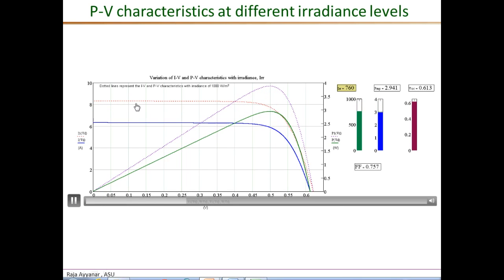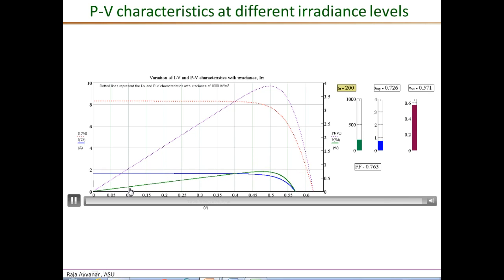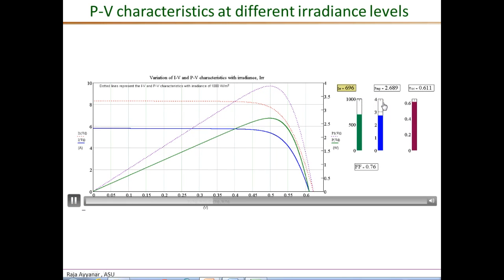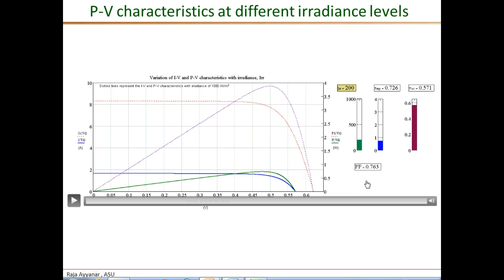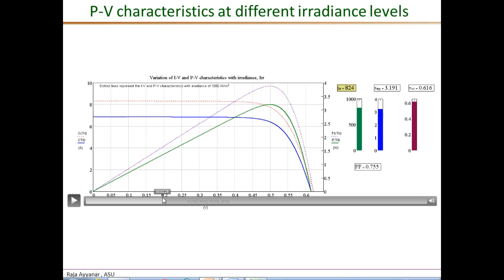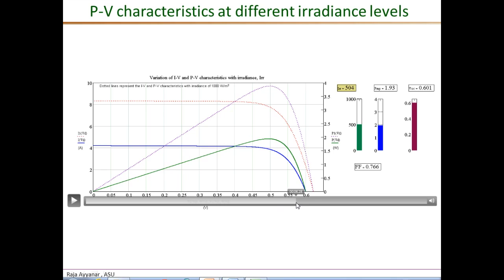In the animation you can see the 1000 W/m² curve staying fixed while as irradiance reduces, both the I-V and P-V plots progressively come down. At 1000 W/m² the fill factor is 0.748. At approximately 500 W/m² the fill factor actually increases to 0.766. At the lowest level of about 200 W/m² the fill factor is 0.763 and the open circuit voltage is 0.571 V. The main point is that the power level decreases almost in proportion to the irradiance, and the open circuit voltage does not change appreciably.